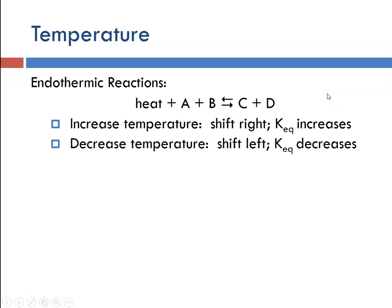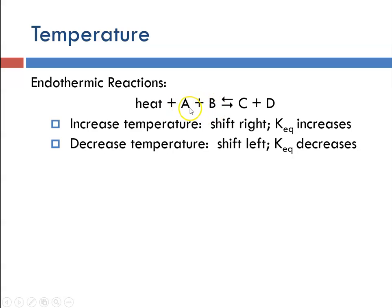If we were to decrease the temperature in an endothermic reaction, the reaction is going to shift left. That means there is more reactant concentration, so the value of Keq is going to decrease — remembering that reactants are in the denominator of the equilibrium expression.